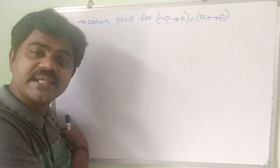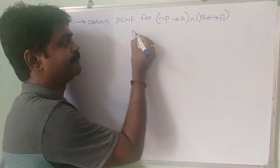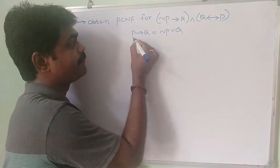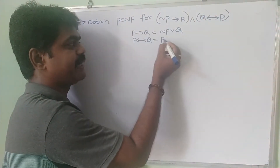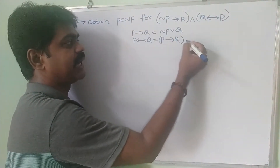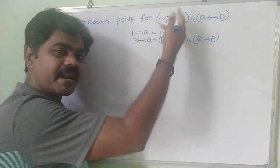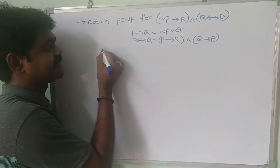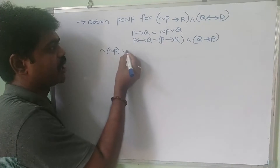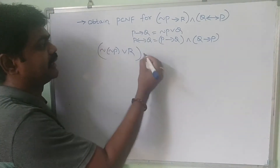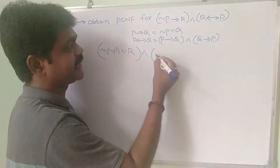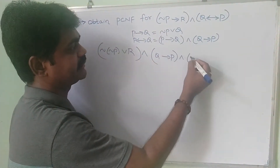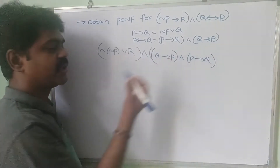First we'll apply the known equivalences. As we know, p implies q can be written as negation p or q. Also, p double implies q can be written as p implies q and q implies p. Applying here: negation p implies r can be written as negation of negation p or r, and q double implies p expands to q implies p and p implies q.